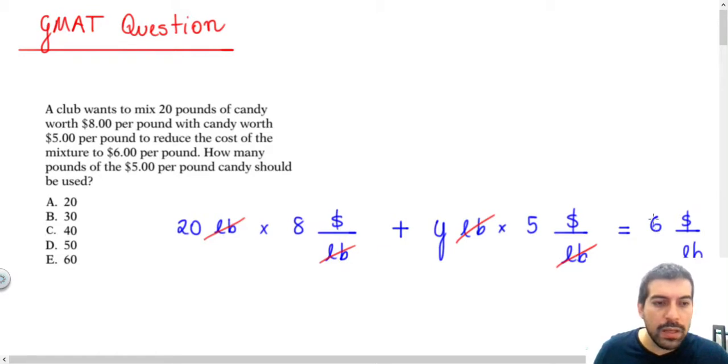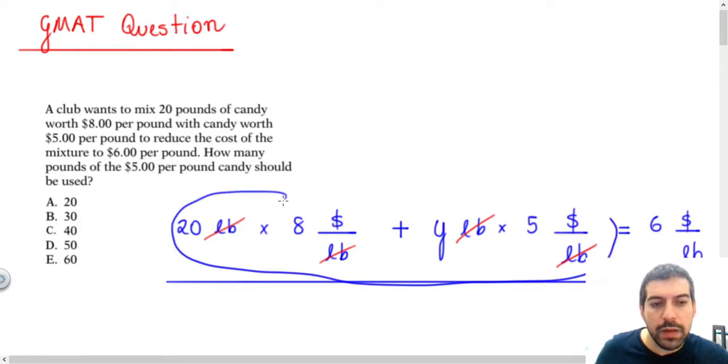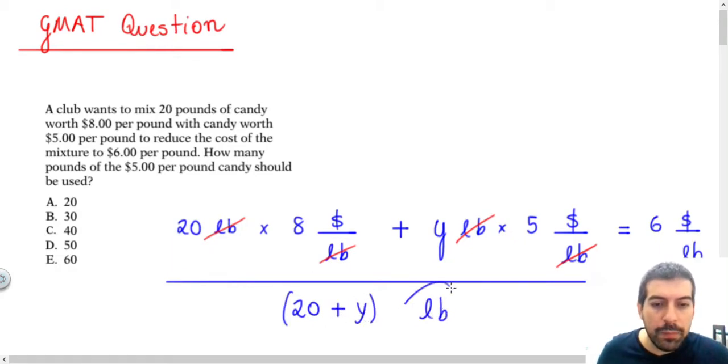Once I need the price per pound of the mixture, I just need to divide by the total amount of pounds that this mixture has. That will be 20 plus Y. This means the total amount of pounds of the mixture.